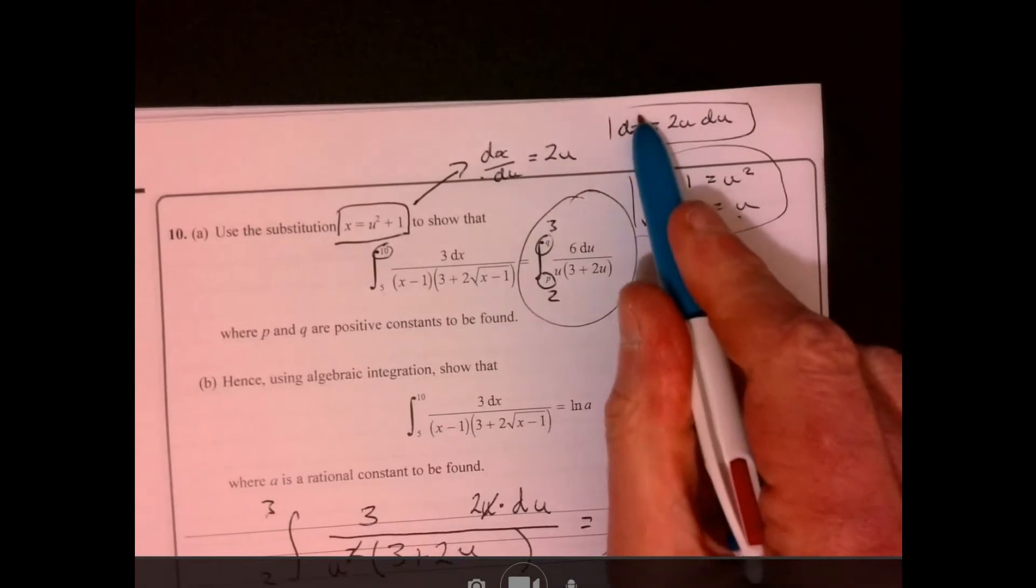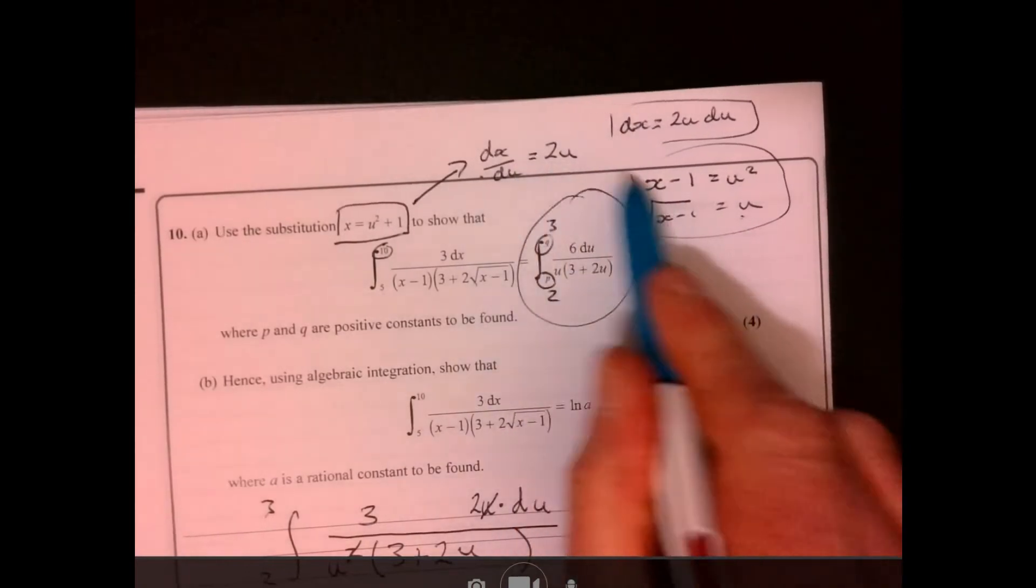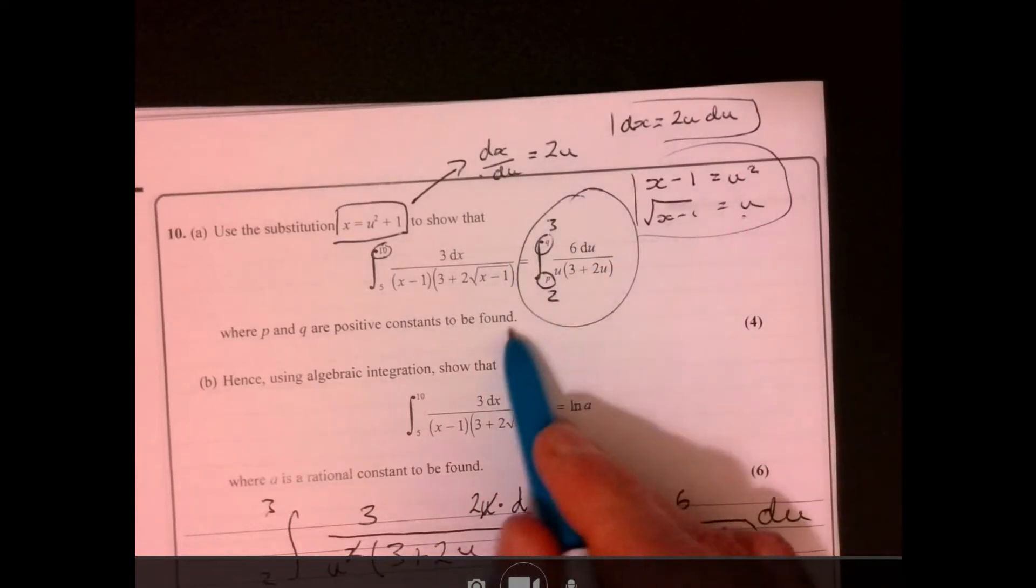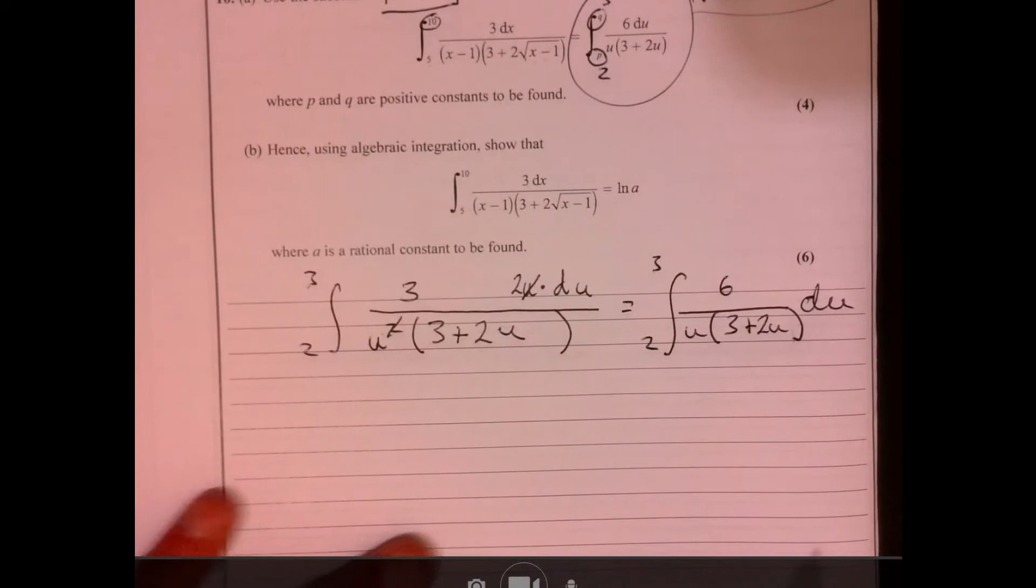That's what we were trying to get to up there. So the key is just really writing down all the possible variations, thinking about what dx is equal to, and then just subbing everything in. All right. Now, let's have a look at part b.